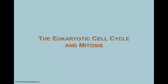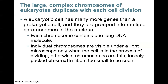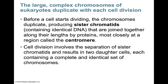Let's look at eukaryotes — the eukaryotic cell cycle and mitosis. The large, complex chromosomes of eukaryotes duplicate with each cell division. Prokaryotes have a single chromosome, whereas eukaryotes are larger, more complex cell types with different numbers of chromosomes depending on the organism. A eukaryotic cell has many more genes than a prokaryotic cell, grouped into multiple chromosomes in the nucleus. Each chromosome contains one long DNA molecule. Individual chromosomes are visible under a light microscope only when the cell is dividing; otherwise they are thin, loosely packed chromatin fibers too small to be seen.